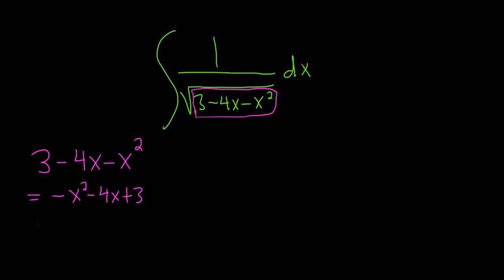Before you complete the square here, you have to make sure that the coefficient of x squared is 1. So we're going to pull out a negative 1 and write it like this: negative x squared plus 4x, right? Because if you distribute the negative, they both become negative.